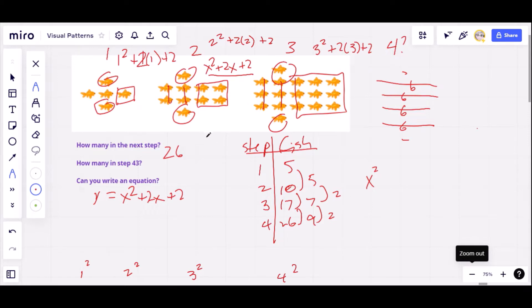All right. Now, getting to step number 43 should be pretty easy. Now that we have this equation, all we need to do is plug in step 43 into that equation. So let's see how to do that. So y equals 43 squared plus 2 times 43 plus 2.